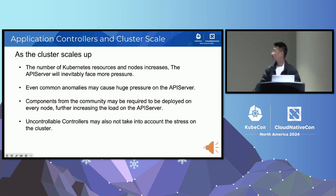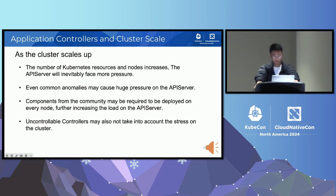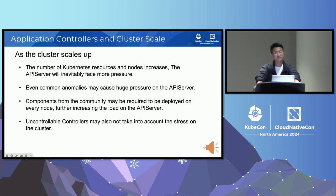The API server provides flow control and API priority to limit requests in order to ensure stability, but this also limits and sacrifices the stability and availability of some applications — they sometimes receive HTTP 429 Too Many Requests. We need to find a way to share the pressure of the API server so that more controllers can work properly.